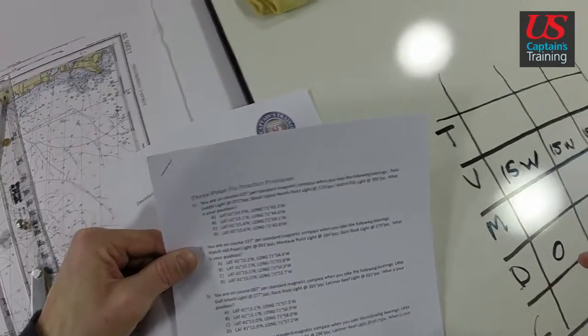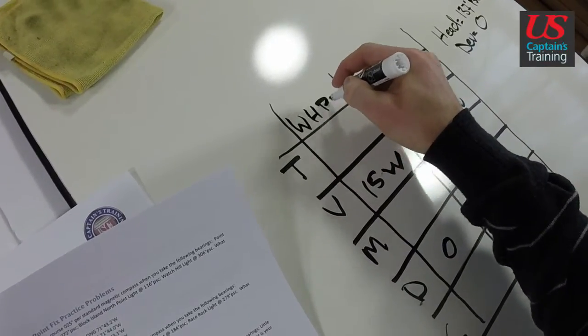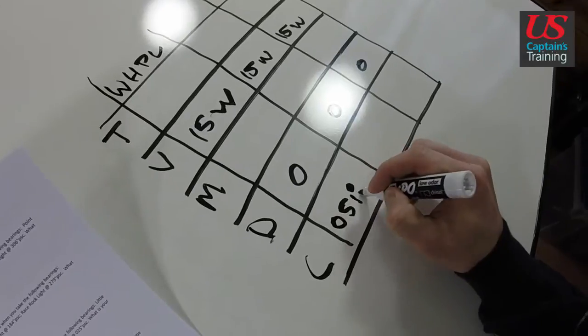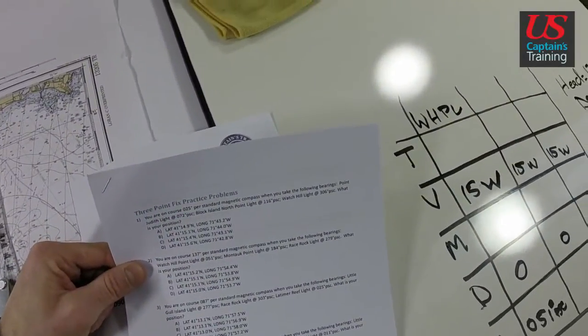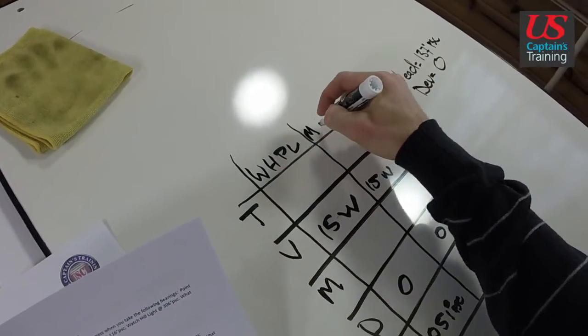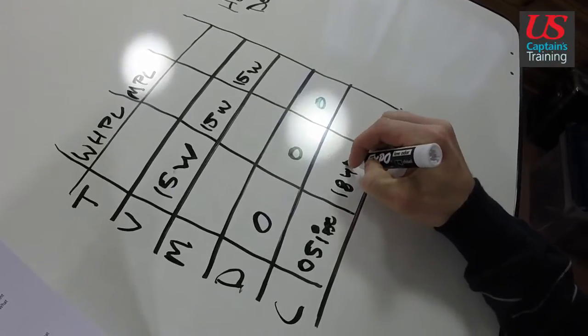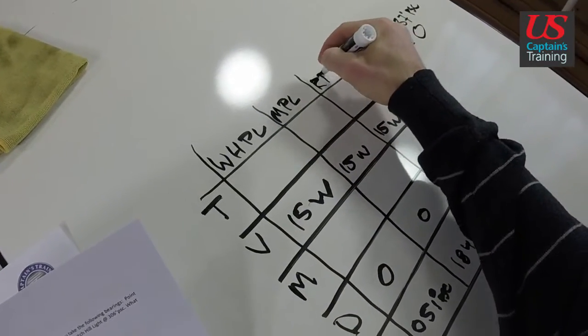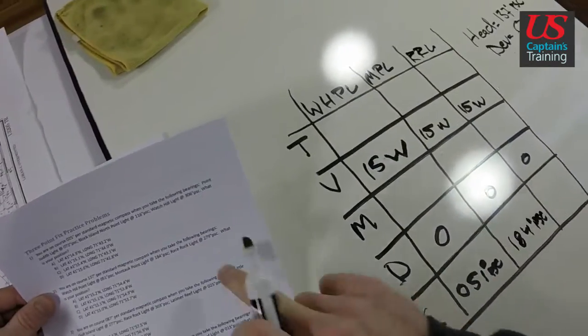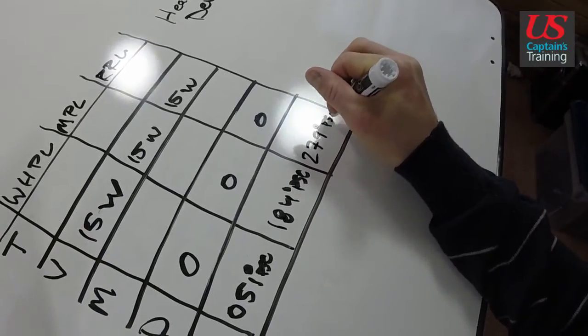Our bearings: Watch Hill Point Light 051 degrees PSC, Montauk Point Light 184 degrees PSC, and Race Rock Light 279 degrees PSC.